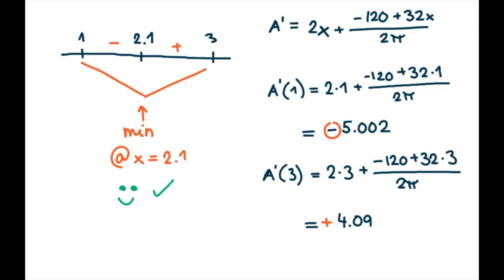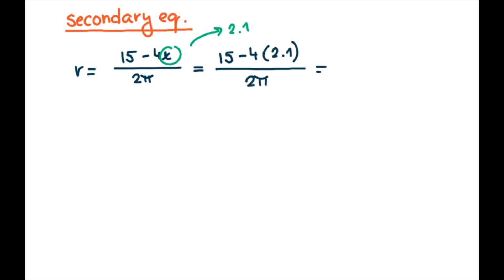So we will actually get the smallest area from 2.1 meters for x. So in order to solve the radius of the circle, we plug in back to our secondary equation because now we solved for x. So if we plug in 2.1, we get that r equals, let's see, r equals 1.05 meters. So we will use this for our circle.